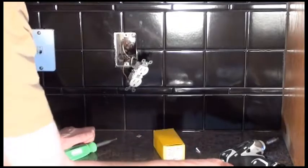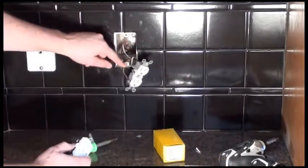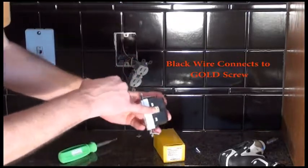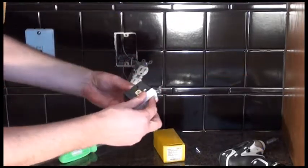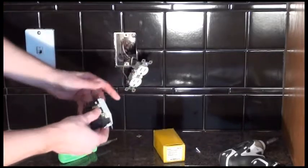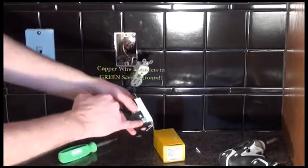It's pretty simple. You have black, white, and the ground. The black goes to the gold-colored screw here. The white goes to the silver-colored screw. And the ground, as always, goes to green.